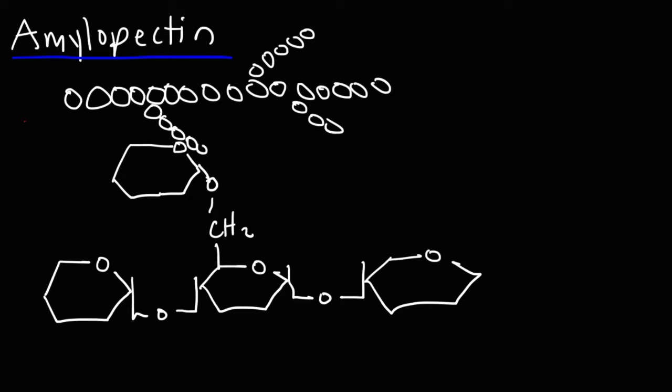The straight chain part of amylopectin has the alpha 1,4 bond, as you can see here. But the branch part of amylopectin has an alpha 1,6 bond. So this is carbon 1,2,3,4,5,6, and that's connected to carbon 1 of this sugar unit. This is still an alpha bond.